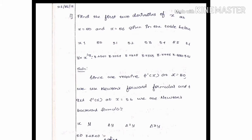The x values are 50, 51, 52, 53, 54, 55, 56. The corresponding y values, where y equals x to the power 1/3, are 3.6540, 3.7084, 3.7325, 3.7565, 3.7798, 3.8030, and 3.8260.